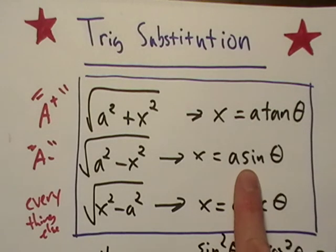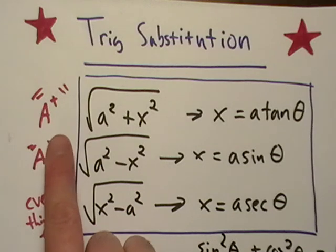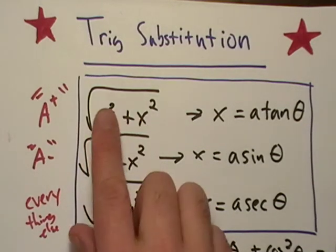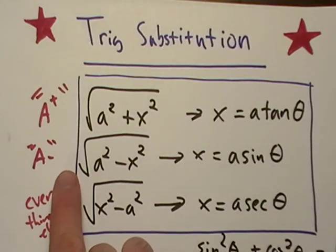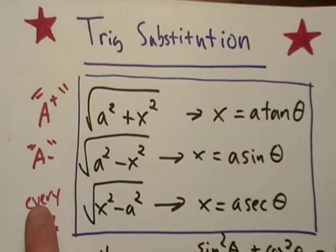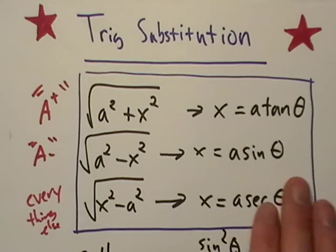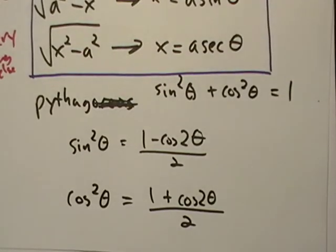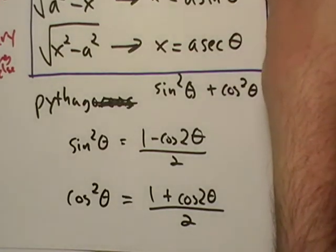The way I memorize these is if I'm looking through a problem and I see a radical and I can't do anything with it, I see a plus, I think tangent. A minus equals sine and everything else, just go to secant. You will also have to use these identities. So write them down if you need to.